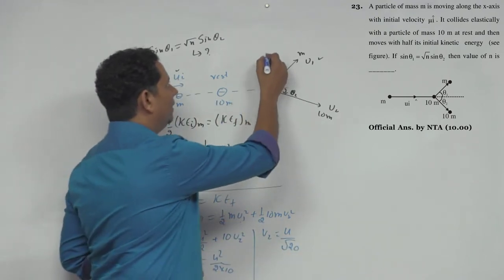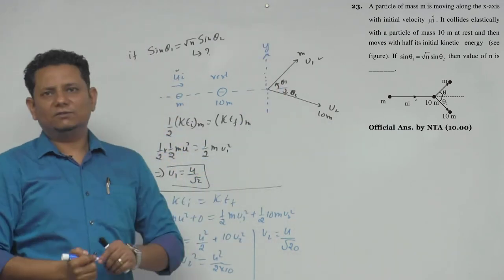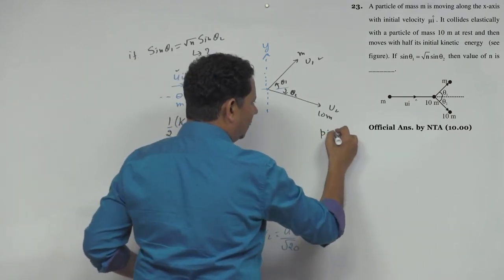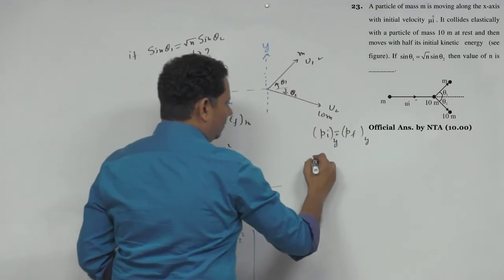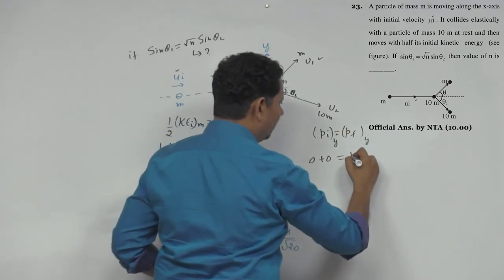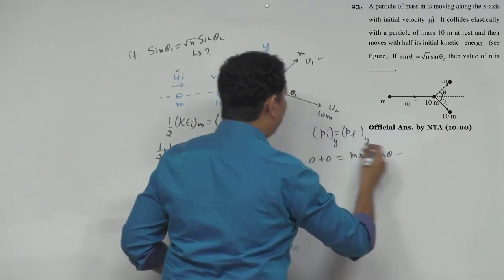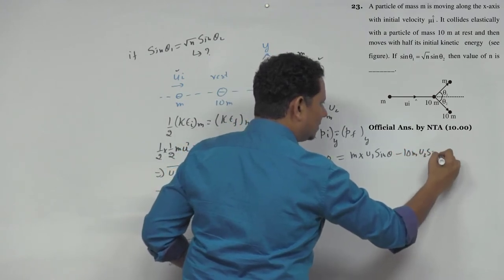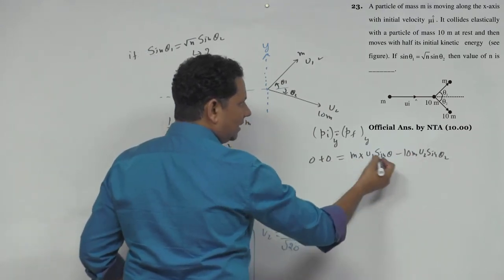Next, apply momentum conservation in the y-direction. Initial momentum equals final momentum. Initially, y-direction momentum is zero for both particles. So 0 = mv₁sin θ₁ - 10mv₂sin θ₂. We can cancel m from both sides.